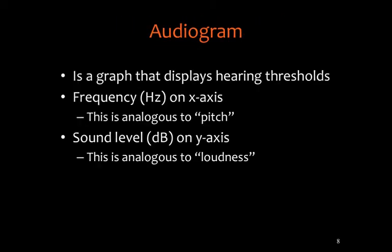The audiogram is a graph that displays hearing threshold with frequency in Hertz on one axis — named after Heinrich Hertz, a 19th century engineer who described microwave technology. The notion of frequency, abbreviated Hz with a capital H because it's a proper name, is analogous to pitch. On the other axis is sound level in decibels — the capital B is named after Alexander Graham Bell — which is analogous to the loudness or amplitude of the stimulus.